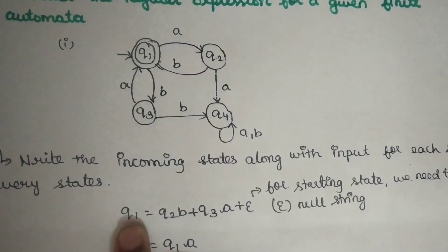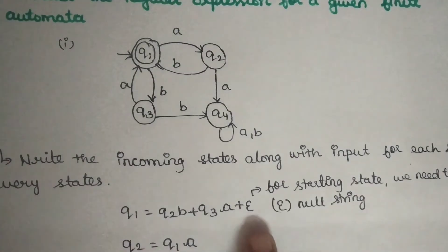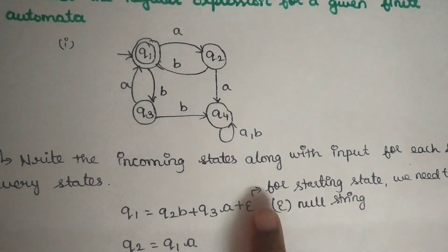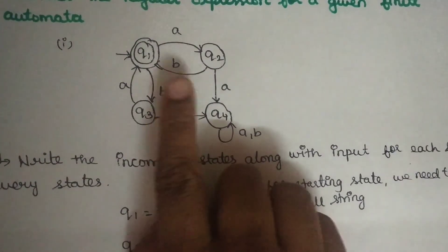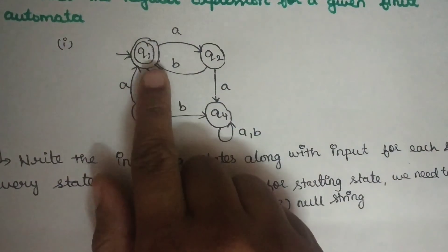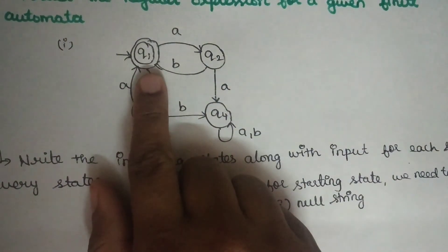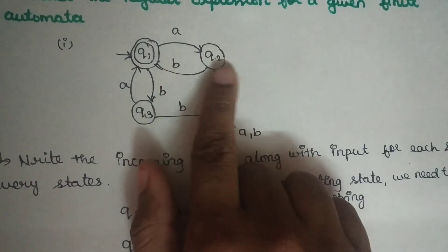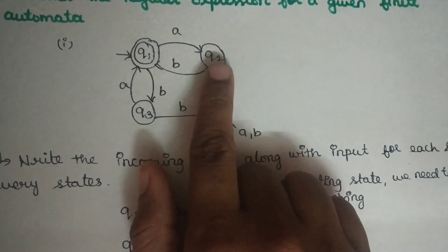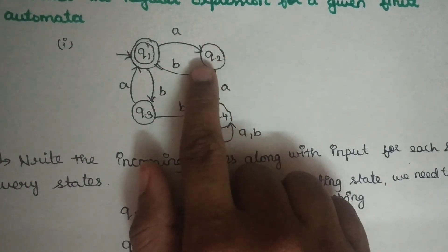When looking at the incoming input, first you add Epsilon to it. In the finite automata, Q1 is the start state and Q1 is also the final state. So if you enter Q1, that means Q2 — what incoming states are in the input.